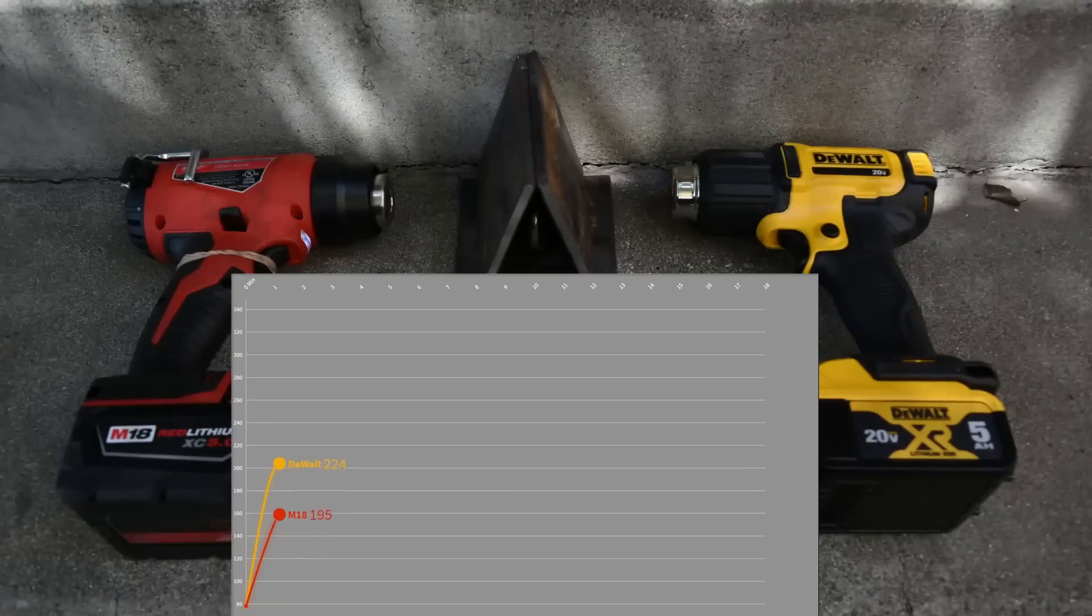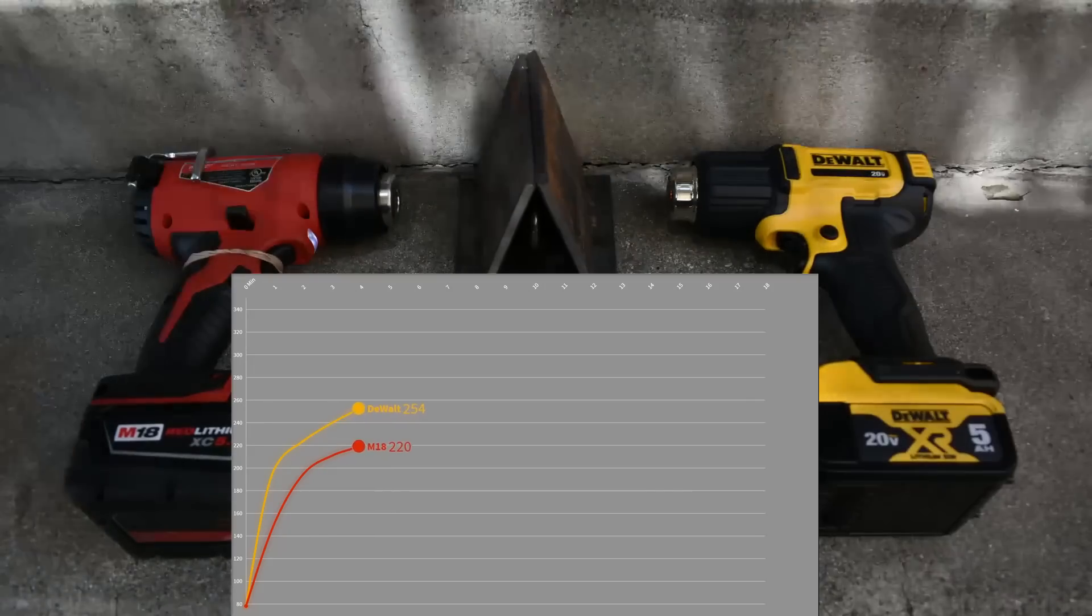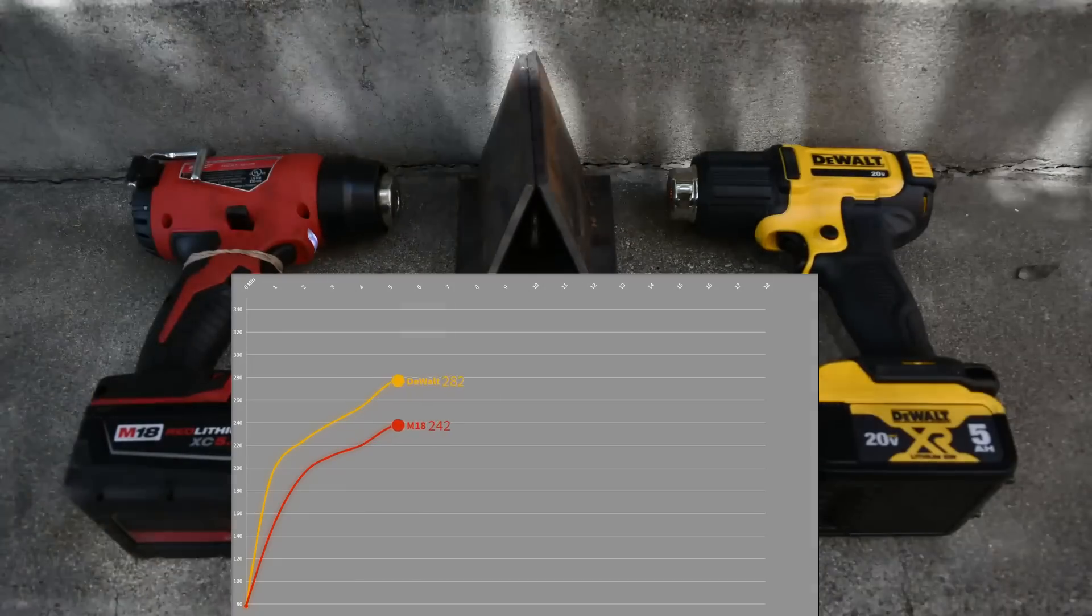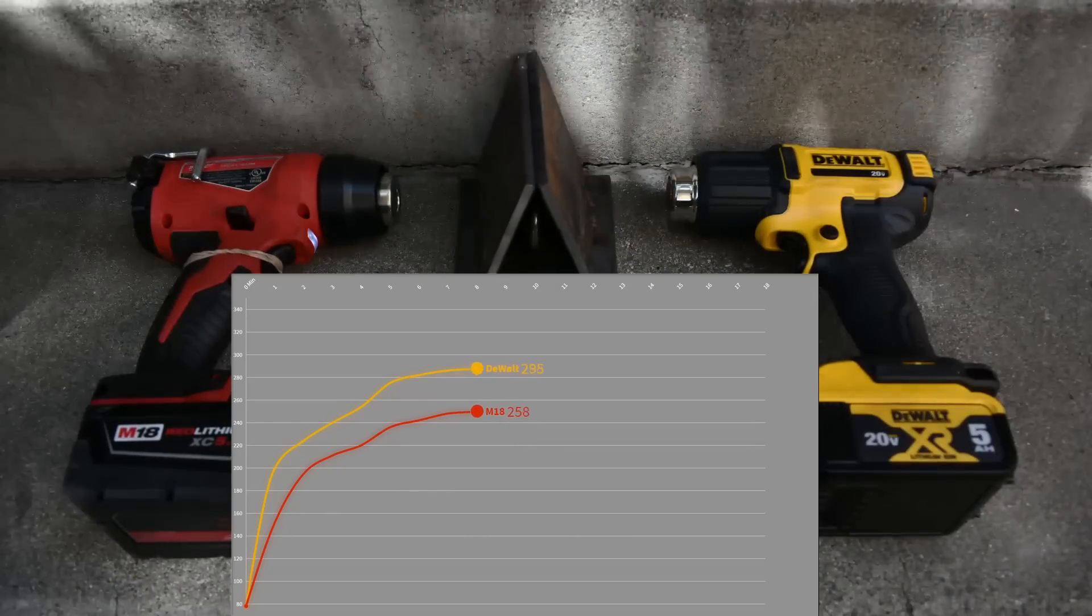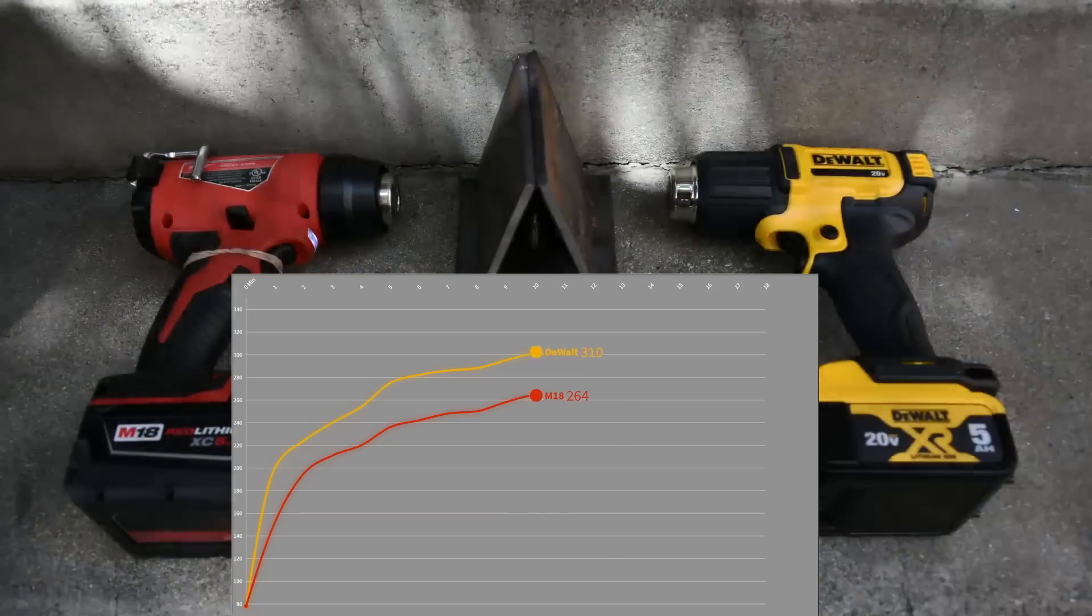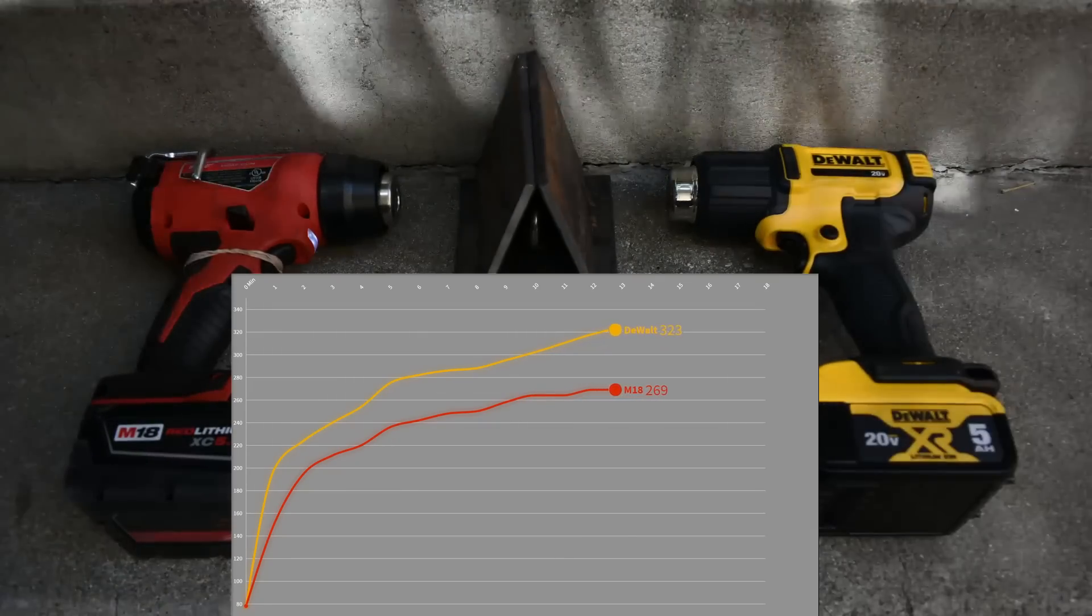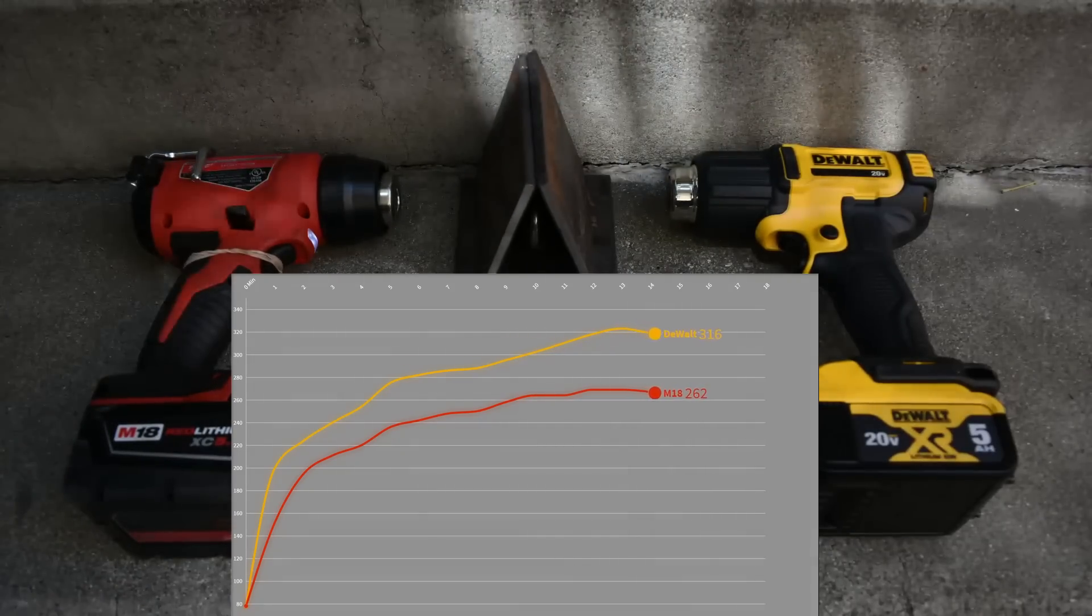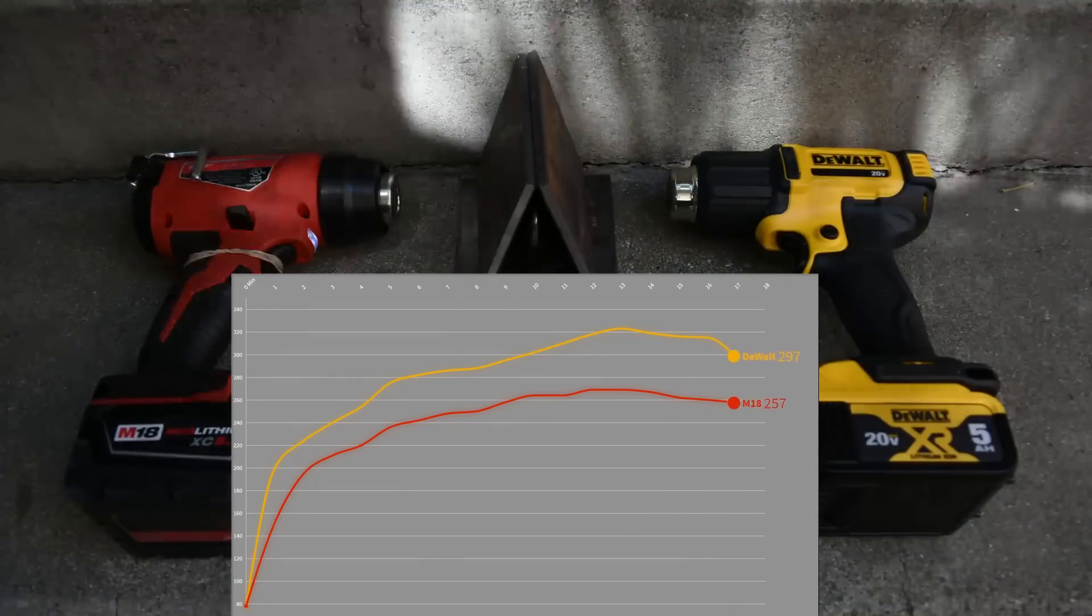So yeah as we said it was not close the DeWalt just does pretty much everything better. It has two speeds high and low, M18 has one. It has a trigger lock so you don't need a third hand when doing heat shrink with this tool standing up. M18 has a finicky trigger safety switch which is annoying to us. It costs much less and as you see here it puts out noticeably more heat.